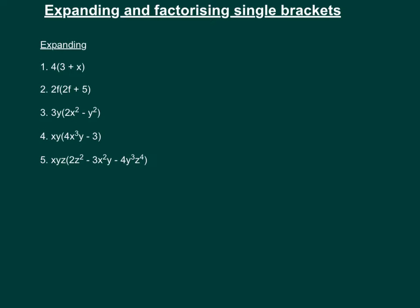The first one is really simple. We've got 4 outside of (3 + x). There's no sign between the 4 and the bracket, so we multiply. We multiply the 4 with the 3 and the 4 with the x. So we get 4 times 3 which is 12, and 4 times x which is 4x, giving us 12 + 4x.